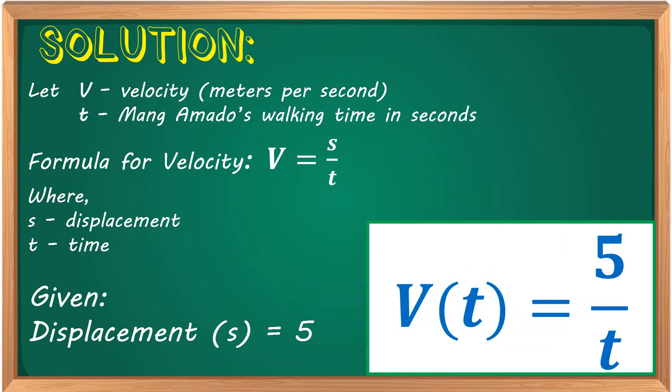So, our answer, we can represent the velocity of Mang Amado as the function v(t) = 5/t.